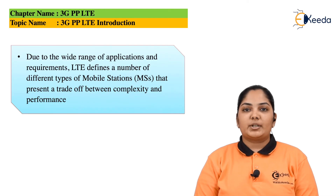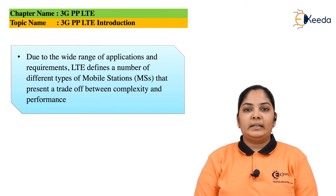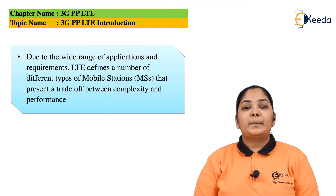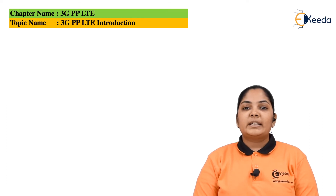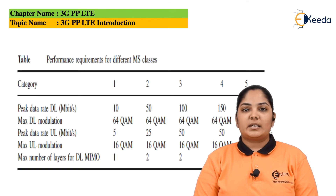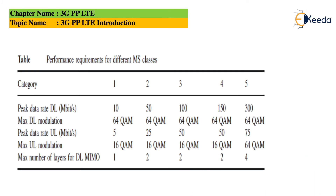Due to the wide range of applications and the required data rate, LTE defines a number of different types of mobile stations. They present a trade-off between complexity and performance. These various classes of mobile stations vary in the range of peak data rate in the downlink direction — 10, 50, 100, 150, or 300 Mbps — and also vary in the uplink direction for data rates of 5, 25, 50, to 75 Mbps. They also vary in the uplink as well as downlink modulation formats.